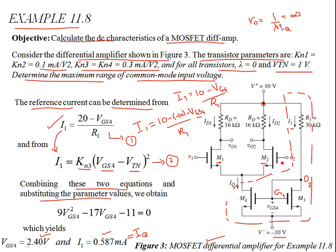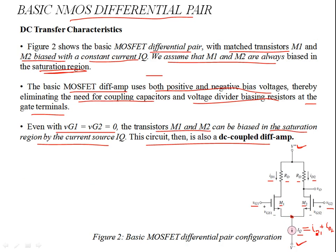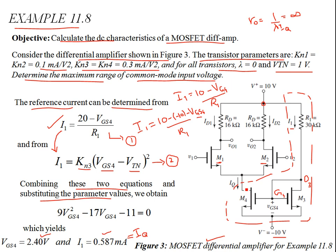IQ = 0.587 mA is the biasing current for M1 and M2, even without applying gate signals at those transistors. Due to the symmetry of the matched M1 and M2 transistors — same conduction parameter, infinite output resistance, infinite input resistance, and same RD — IQ splits equally: ID1 = ID2 = IQ / 2 ≈ 0.294 mA. In this fully MOSFET-based IC design, even the RD resistors can be replaced by active transistor loads.